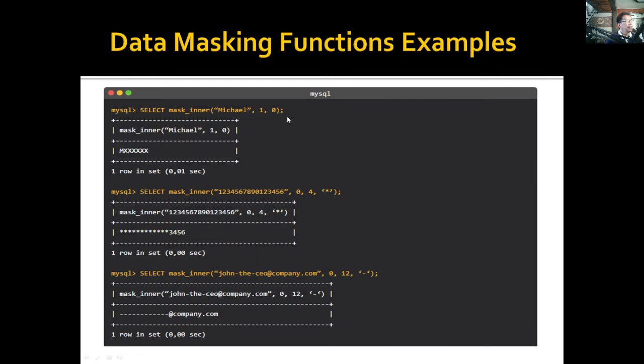Since we did not specify what will be used for masking, it will use letter X. Here, it will not reveal anything at the beginning and will only reveal four characters at the end using asterisk for masking. If we have this value, it will only show the last four. Similarly, this will only show the last 12 and use hyphen.